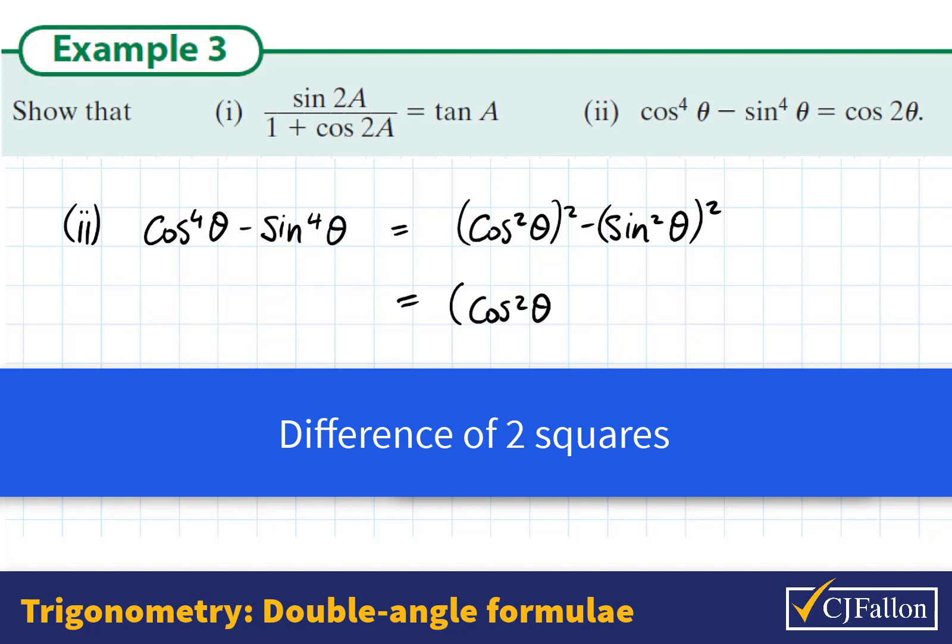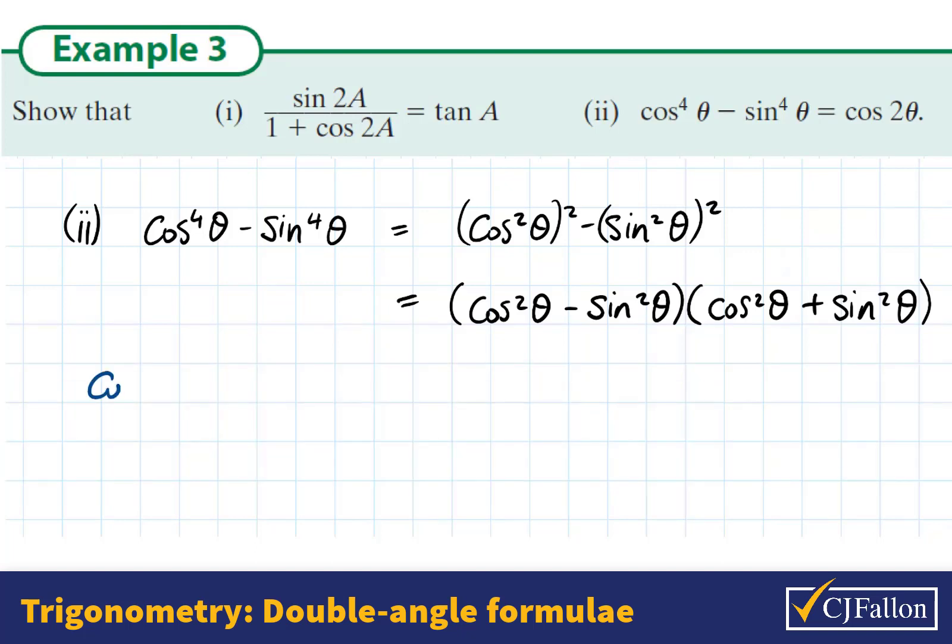So the rule here would be cos squared theta minus sine squared theta, and we factorize it multiplied by cos squared theta plus sine squared theta. Now if we look up in our formulas and tables book we can see that we could turn this into a double angle which is what we want to do. So we want to relate it to cos 2 theta because that's what the question is asking.